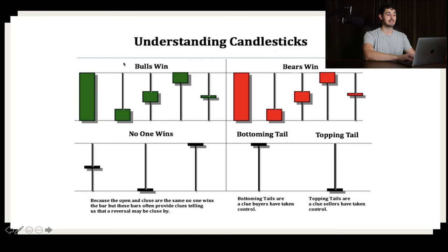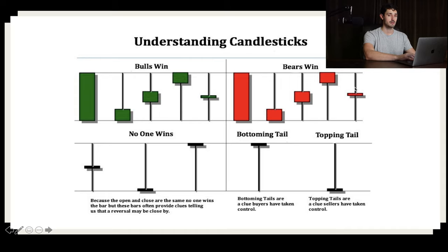With this candlestick we have a topping tail — a really long wick or tail towards the top. Same thing on the green version here. And right here we have a bottoming tail where the wick is obviously towards the bottom — for both the green and red candle. And these two bars here are called doji bars. Let's talk about what a topping tail, a bottoming tail, and a doji bar actually represent.